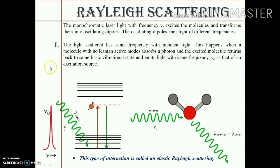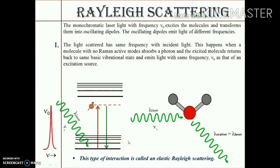So it is a process wherein the molecule absorbs the laser energy, gets excited to the higher energy state — the virtual state of that species — and when it comes back to its original energy level, it emits that extra amount of energy. This emitted photon is actually the one we measure. The scattered radiation observed in this process carries the same frequency as that of the incident laser, and we get a Raman spectrum like this.